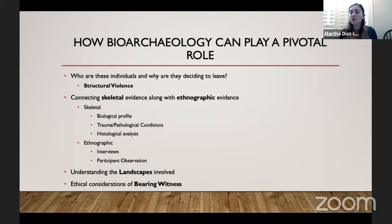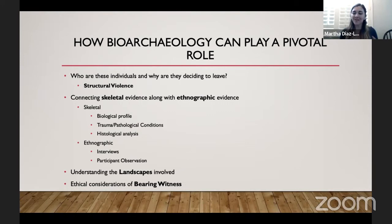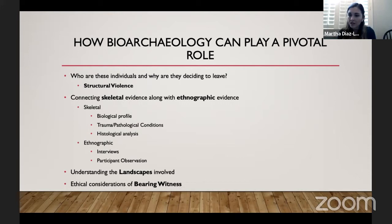We can also look at cortical bone thickness to see if there's any growth stunting. If someone is not getting the proper nutrition they need, it will affect their stature — which is often what we see with many migrants; they are shorter in stature because they didn't have the necessary resources to grow fully. The ethnographic component is a twist that I think is really important, because while the skeleton can tell us so much, it's important to also speak with individuals who are actually doing the crossing and did make it — or are planning to — because it connects both sides of the story, giving them a voice not just when they're deceased, but also while they're alive so we can address the root cause.